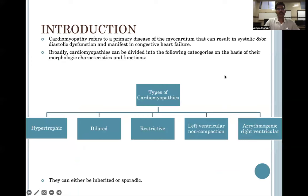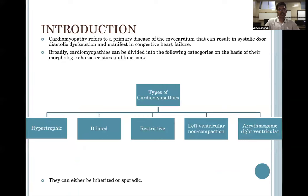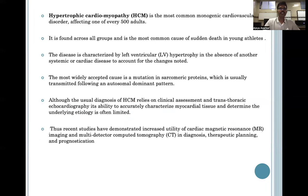Cardiomyopathy refers to primary disease of the myocardium that can result in systolic and/or diastolic dysfunction and can manifest in congestive heart failure. Types of cardiomyopathies can be hypertrophic, dilated, restrictive, left ventricular non-compaction, and arrhythmogenic right ventricular. These can either be inherited or sporadic.